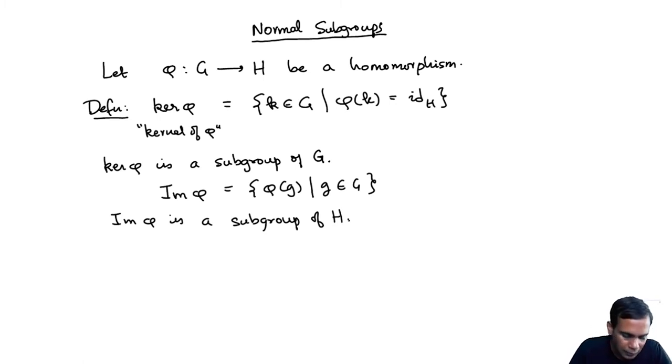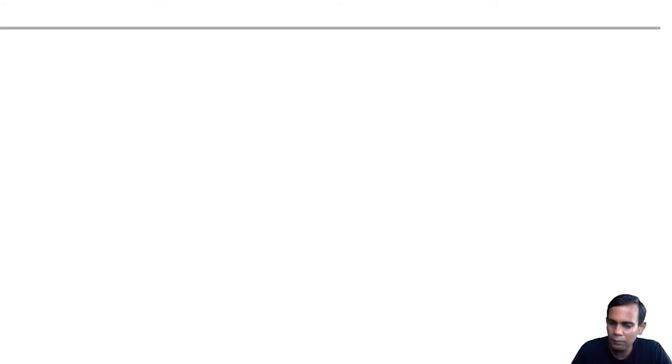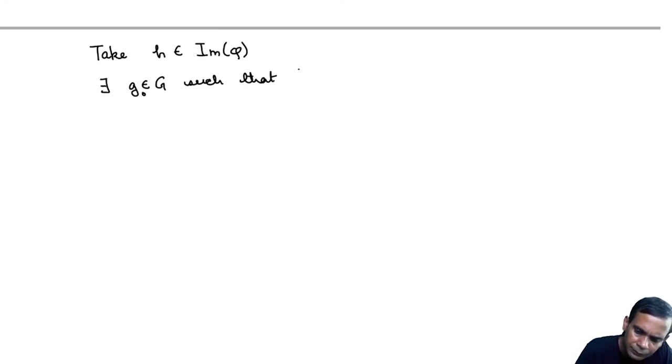Now let's try to understand what are the elements which are the pre-images of elements of H. Take an element H in image of phi. What does that mean? There exists G in G, let's say G0 in G such that phi of G0 is equal to H.